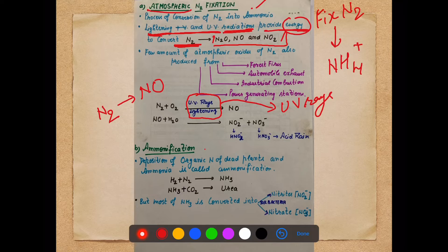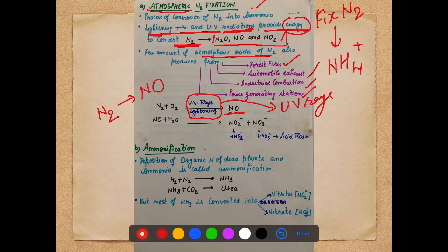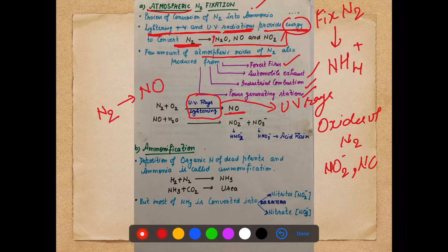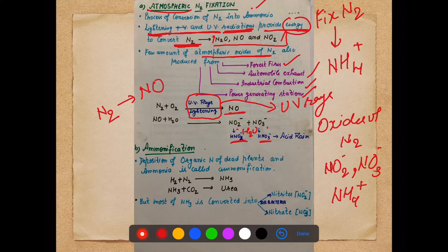A small amount of atmospheric oxides of nitrogen can also come from forest fires, automobile exhaust, industrial combustion, or power generating stations. The aim is to convert these oxides of nitrogen into usable forms — either nitrate, nitrite, or ammonia — which plants can use. In the presence of water, nitrite and nitrate can form HNO2 and HNO3, which reach the earth in the form of acid rain.